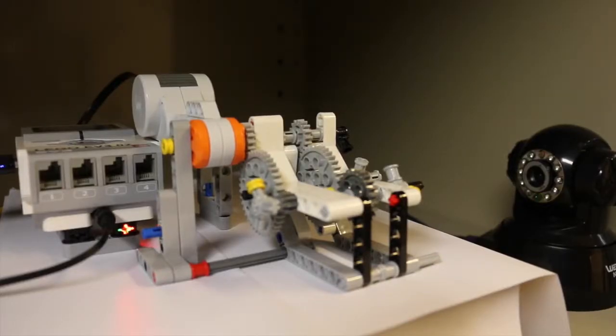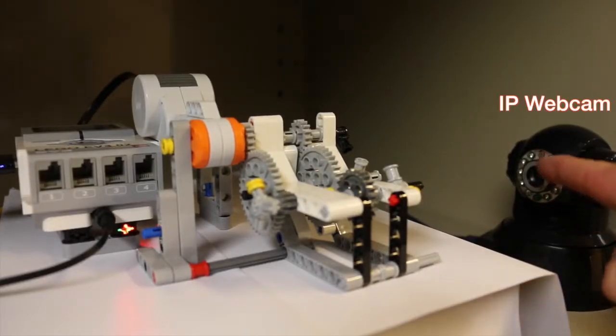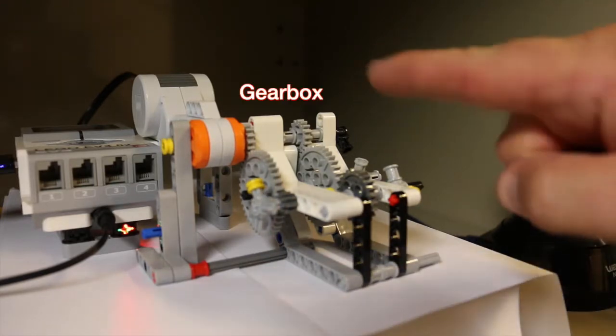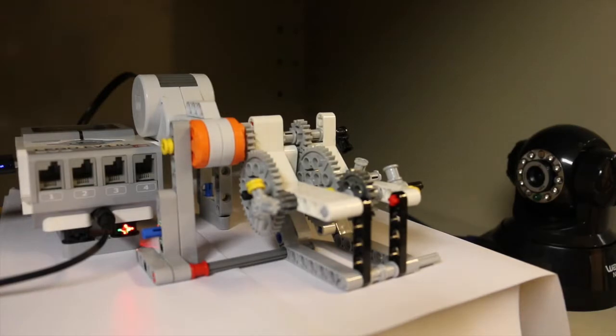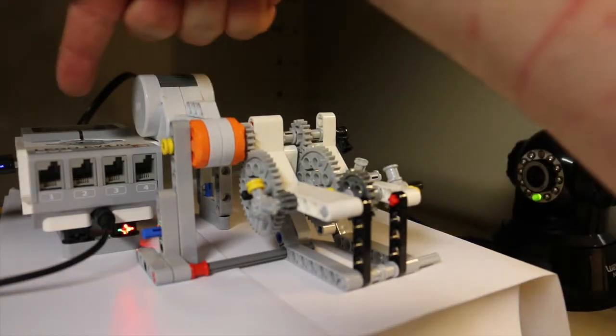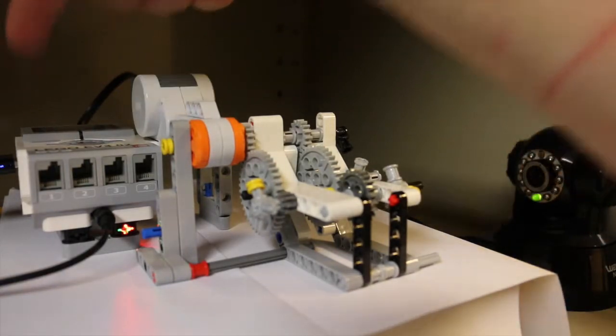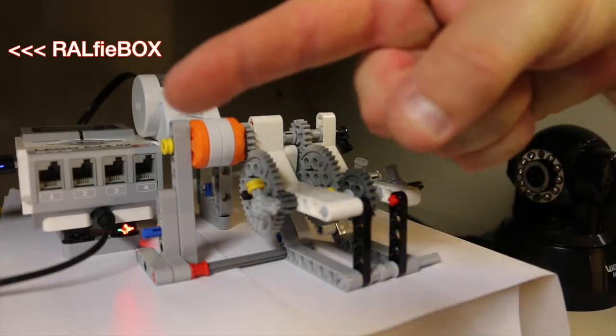Alright, so basically what this activity is about is using the webcam over here to actually view the gearbox reduction ratios apparent in the gearbox mechanism here. So how does this work? We have the Lego Mindstorm over here connected with the Wi-Fi to the Ralphie box, which is off over in that direction.